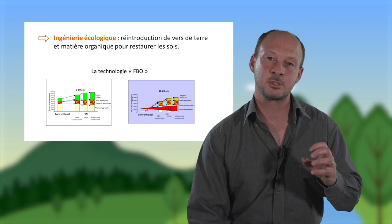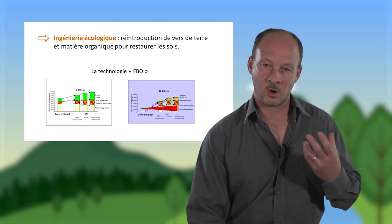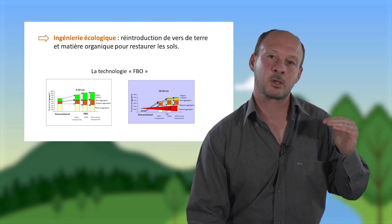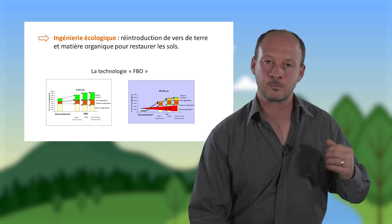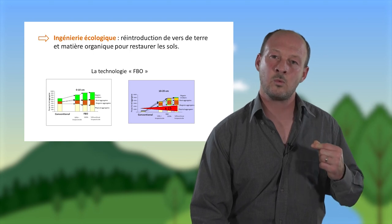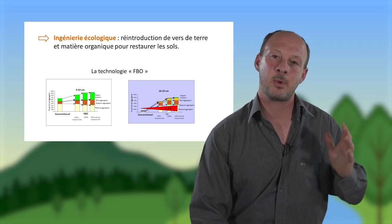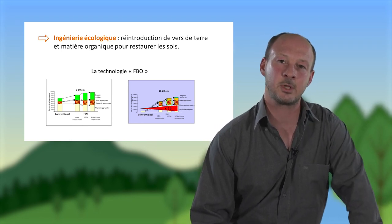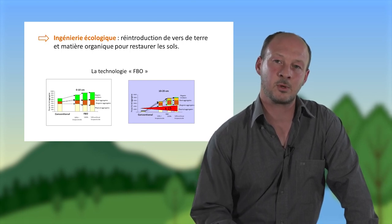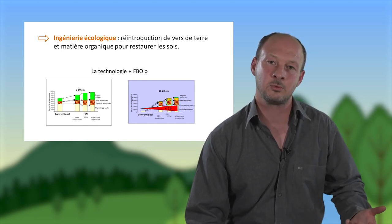Ces agrégats permettent de restituer une porosité au sol. Grâce à cette technologie purement biologique, on atteint les mêmes rendements que ceux obtenus avec une agriculture conventionnelle utilisant beaucoup d'intrants. Des dégustateurs en aveugle ont attribué des notes supérieures au thé produit grâce à la technologie FBO par rapport au thé produit de façon conventionnelle. De plus, on peut espérer des revenus améliorés pour les agriculteurs utilisant cette technologie, car ils pourraient vendre leur thé comme produit issu de l'agriculture biologique.